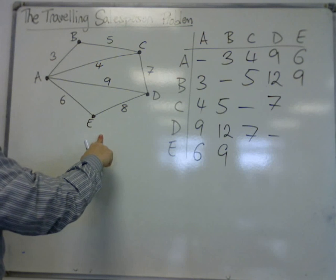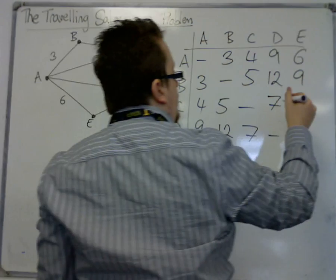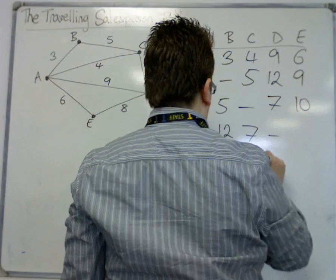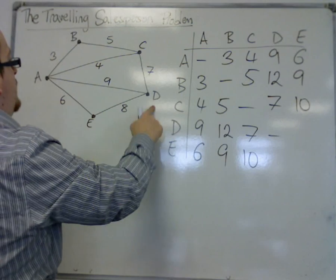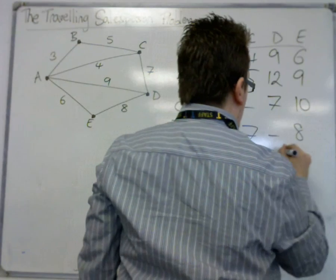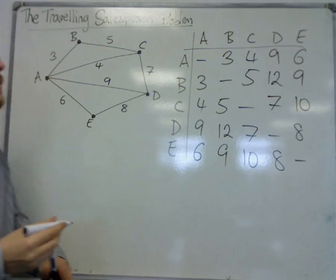So 10 is the most promising at the moment. Yeah, I think that's 10. And then we've got D to E. So D to E, we've got an 8. I think that's the best that we can do. And E is not connected to itself.